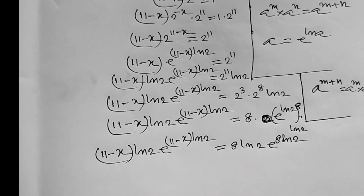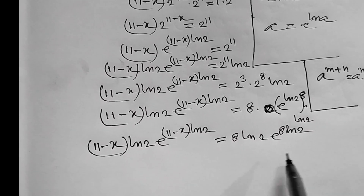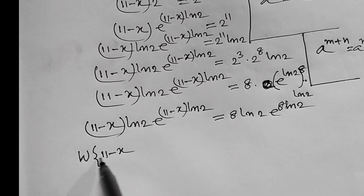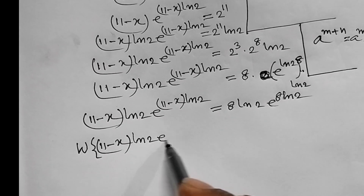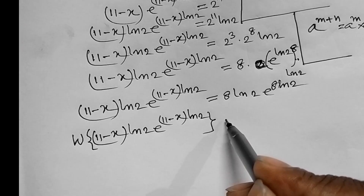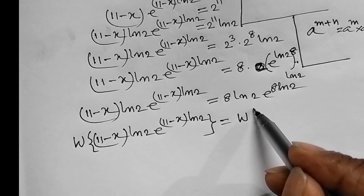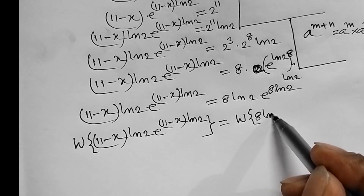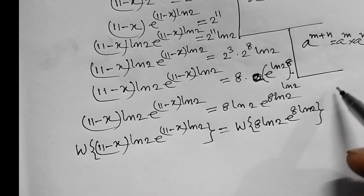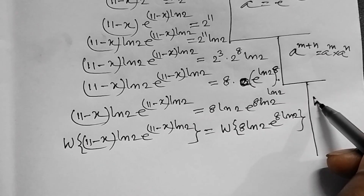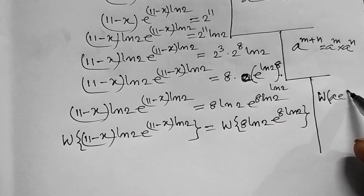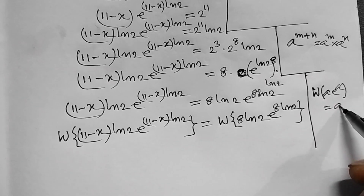Now we will have to apply the Lambert W function. Therefore, applying the Lambert W function to both sides, we get W of 11 minus x times ln of 2 times e to the power 11 minus x times ln of 2 equal to W of 8 times ln of 2 times e to the power 8 times ln of 2. We know the Lambert W function property: W of a times e to the power a equal to a.